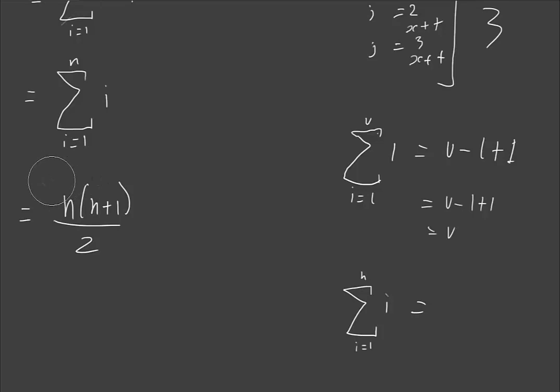And so then obviously, if we want the efficiency class, we can simply say that that is bound by theta of n squared. That's pretty obvious, because this is going to simplify down to n squared plus n over 2. These don't matter because they're not the highest order polynomial. And so n squared is our class. But in terms of the full efficiency function, it is n times n plus 1 over 2.